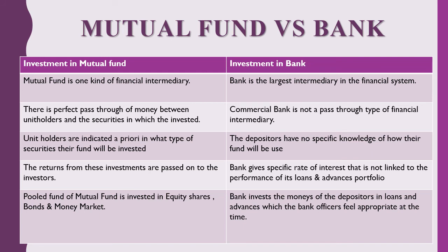Unit holders are indicated a priori in which type of securities the fund will be invested, whereas depositors have no specific knowledge of what their fund will be used for. The returns from these investments are passed on to the investors, whereas a bank gives a specific rate of interest that is not linked to the performance of its loan and advances portfolio. Pooled funds in mutual funds are invested in equity shares, bonds, and money market, whereas a bank invests the monies of depositors in loans and advances which the bank officer feels appropriate at that time.